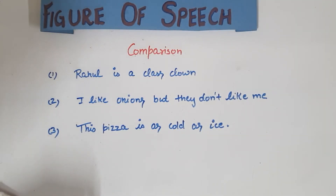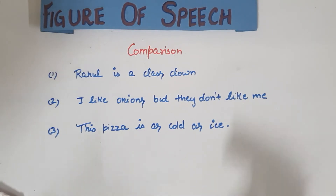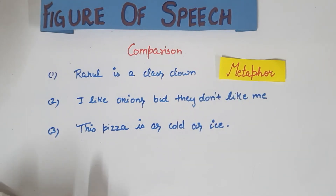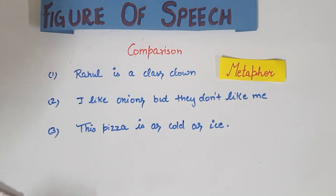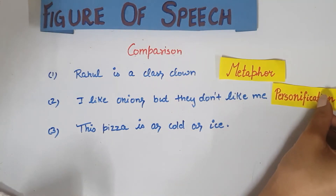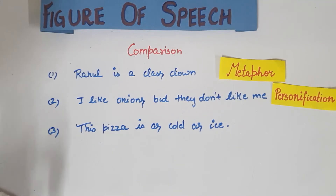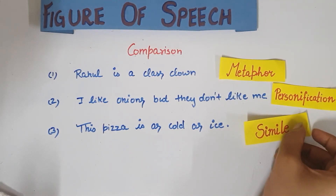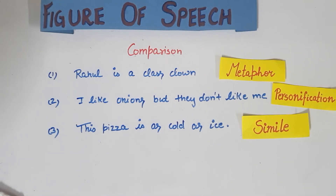Let's do a quick exercise. Three sentences are written — identify whether each is simile, metaphor, or personification. First: 'Rahul is a class clown' — this is metaphor. Second: the onions sentence — this is personification, because onions can't like or feel, but we are comparing them with human attributes. Third: 'This pizza is as cold as ice' — here we compare pizza's coldness to ice's coldness using 'as,' so this is simile.